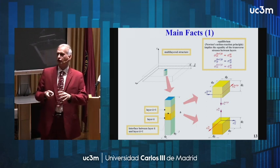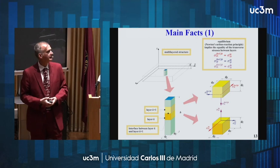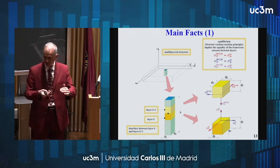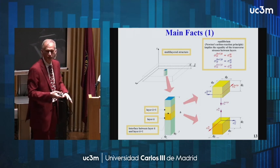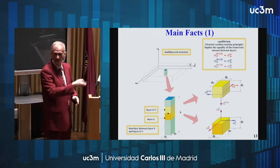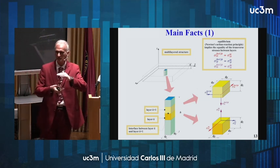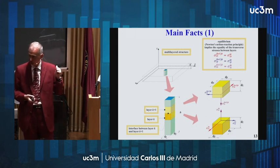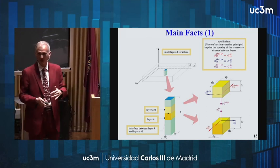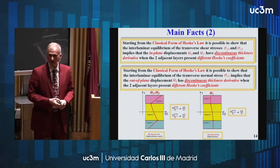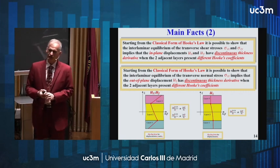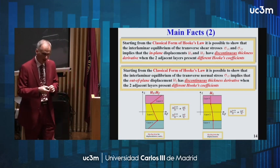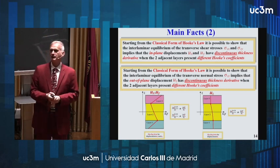If you consider one of the composite panels of the airplanes we've seen, you have multiple layers. Between layers, you have to have equilibrium; otherwise, the structure would be damaged. Equilibrium means the stresses at the interface — if you imagine detaching the layers — must be the same, specifically the transverse stresses. So was the model we saw earlier good for that? Not good, because we didn't even mention the stresses in the model. It was only about displacements.